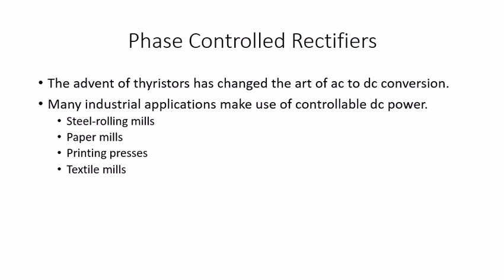Many industrial applications make use of this controlled DC power — steel rolling mills, paper mills, printing presses, textile mills, etc. These are the industries which use this basic thyristor, a small instrument that gives the pulse to drive the working of these machines.